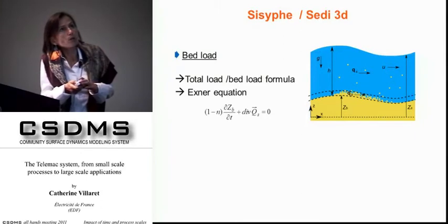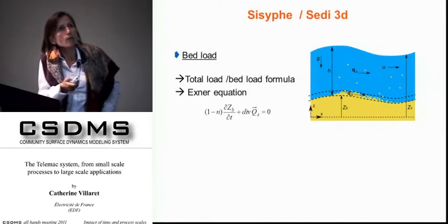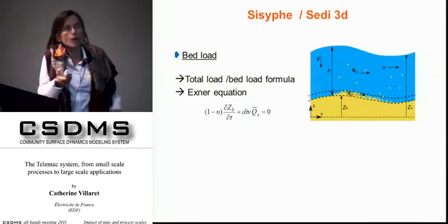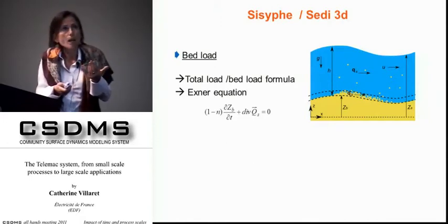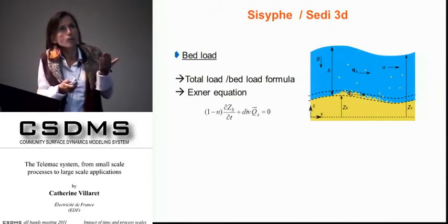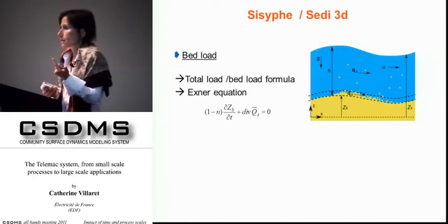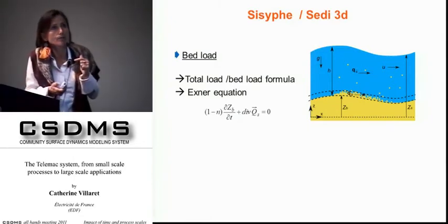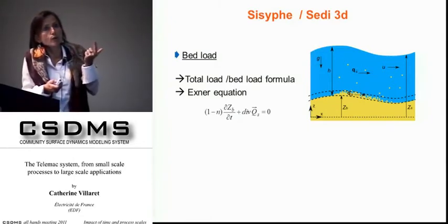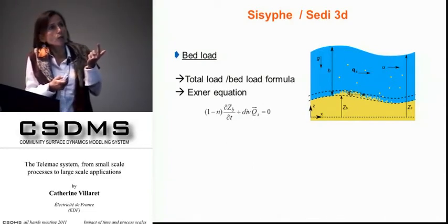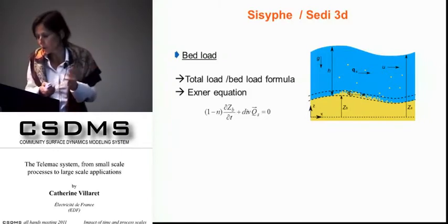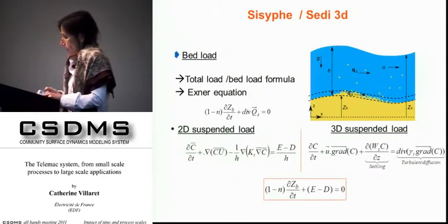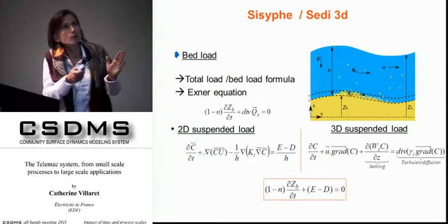For bed load, we have a choice of 10 semi-empirical formulas from the literature, including classical ones like Van Rijn and Meyer-Peter. The bed load transport rate is related to the excess of bed shear stress over critical bed shear stress. Once you derive the bed load transport rate, you solve the Exner equation using finite elements, where you have bed porosity and elevation change due to bed load.